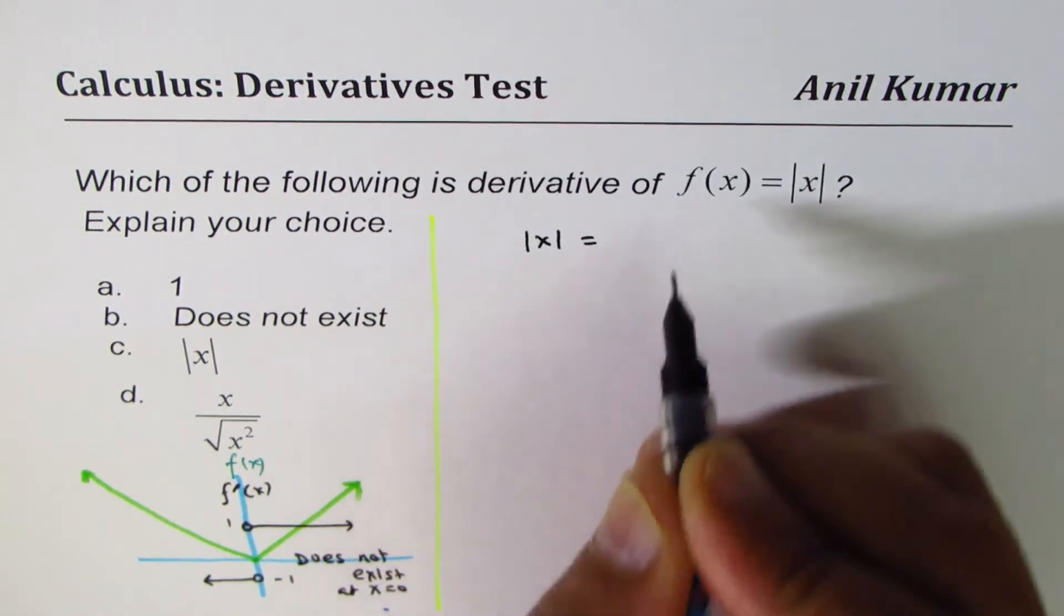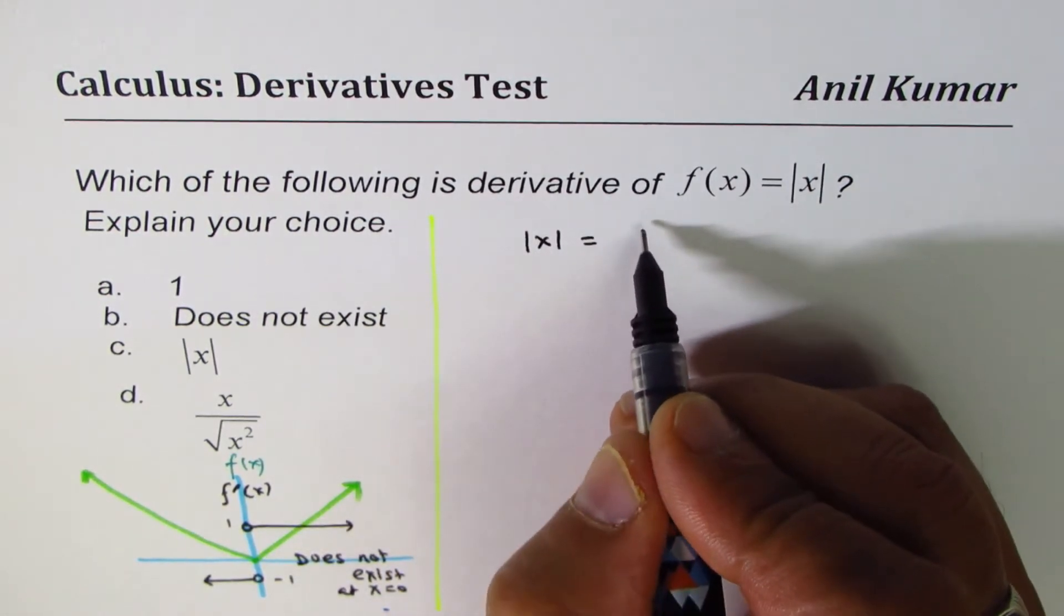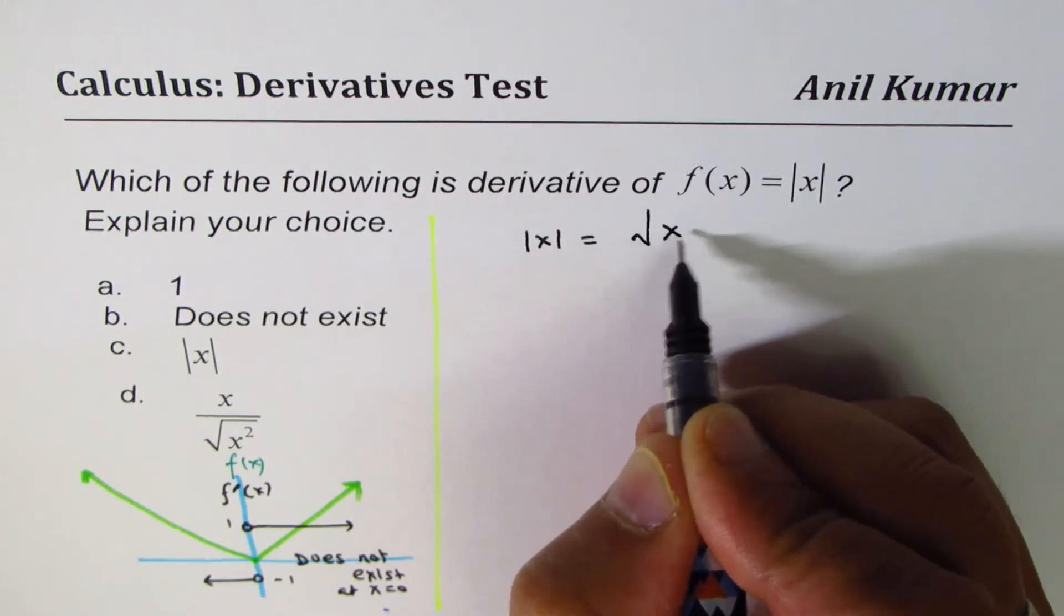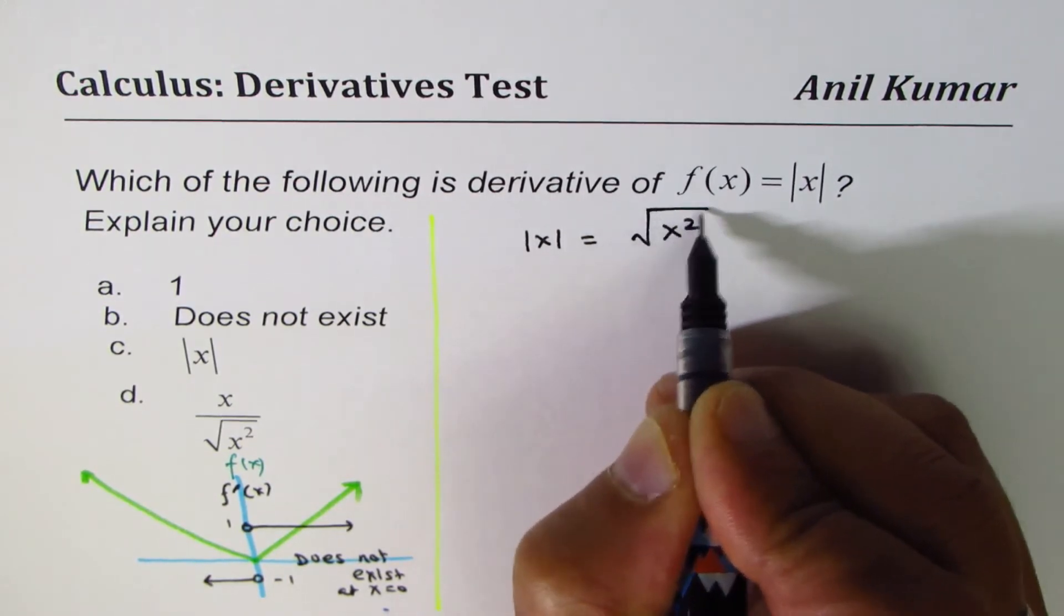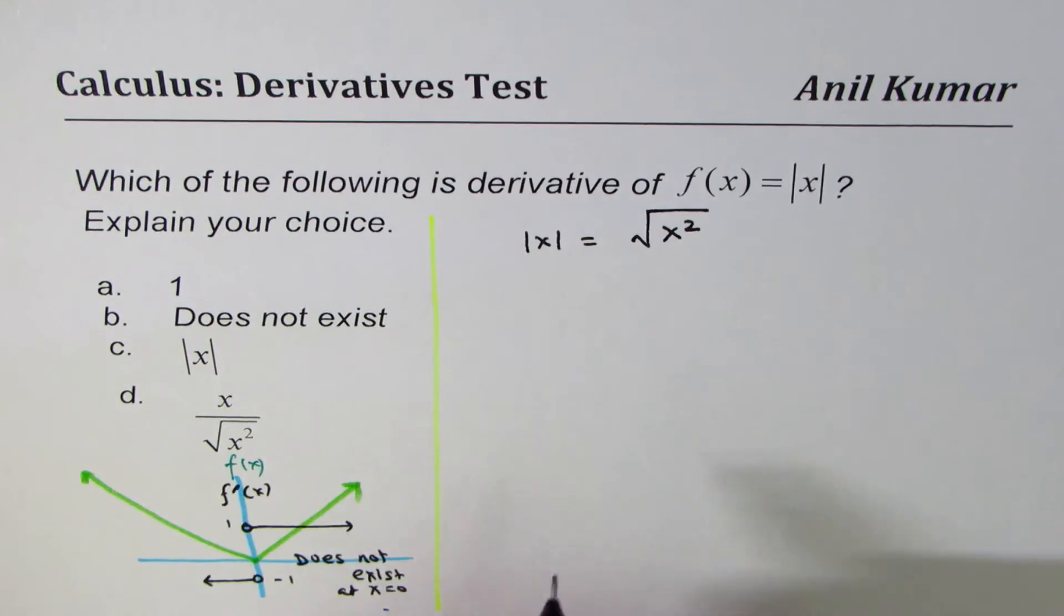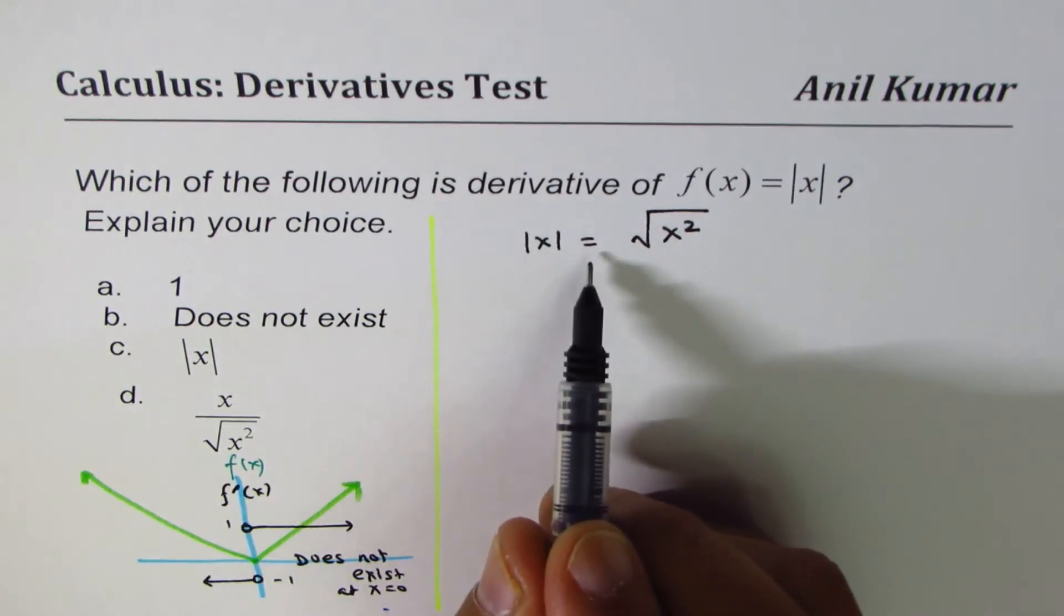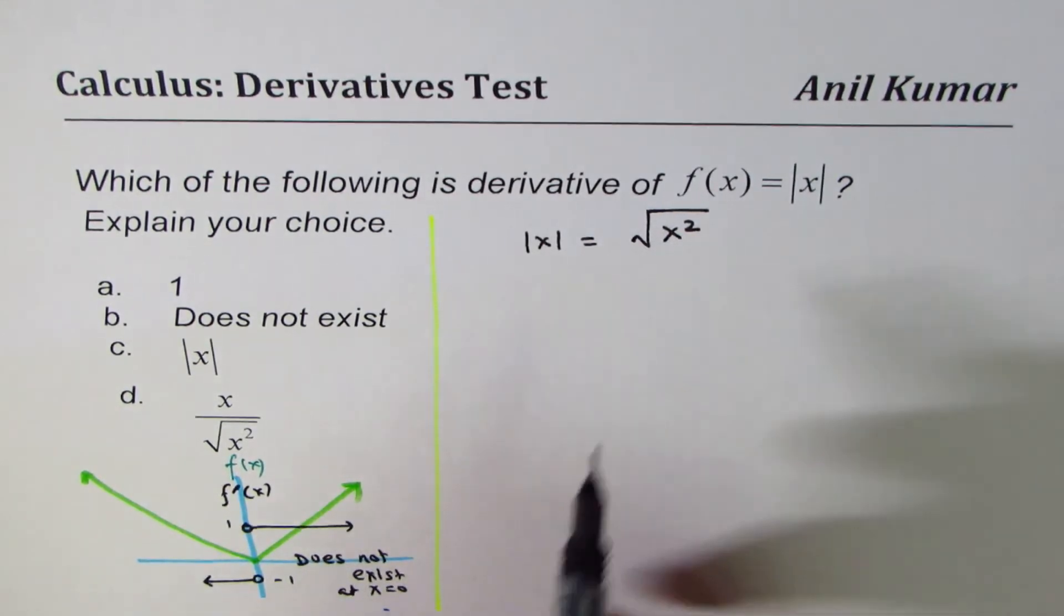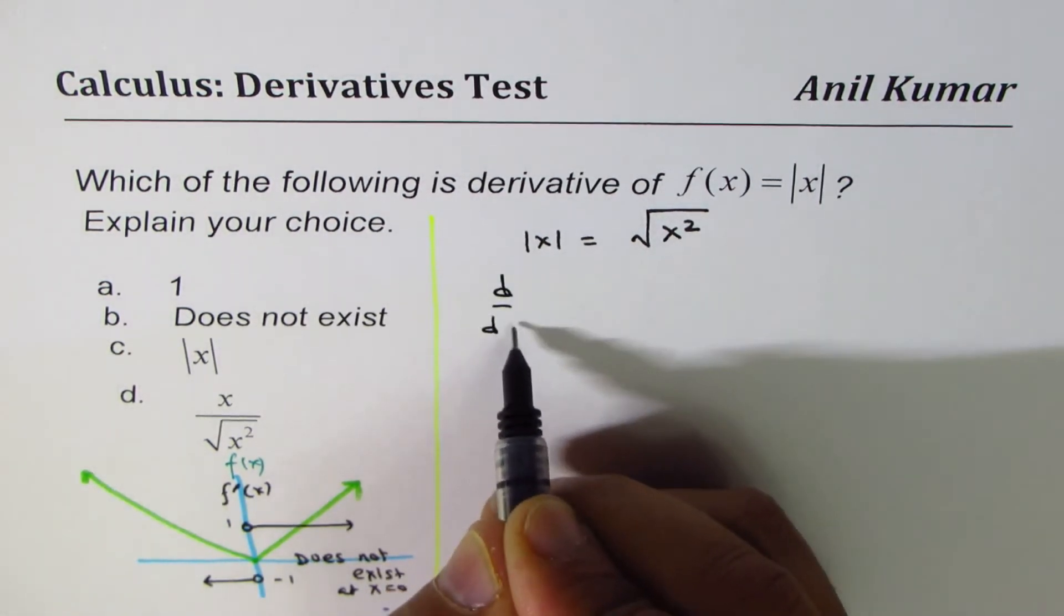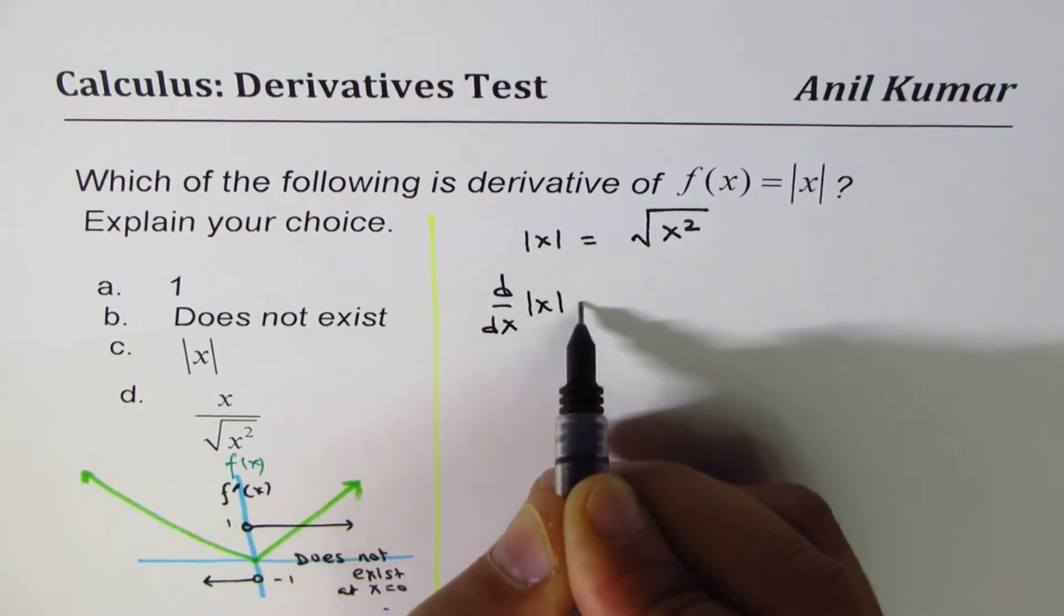Absolute value of x could be written as square root of x squared. This is very important to understand. Absolute value of x could be written as square root of x squared. Now, the derivative of this function, d/dx of absolute value of x,